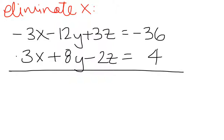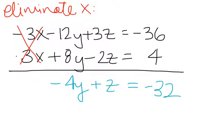Now I'm going to add these equations together, so you see the x's get eliminated. And as before, we end up with negative 4y, and this time we're going to get plus z, and now if I do this subtraction, I get negative 32.